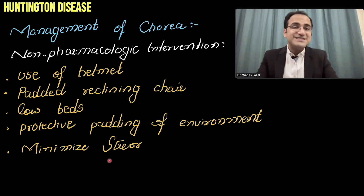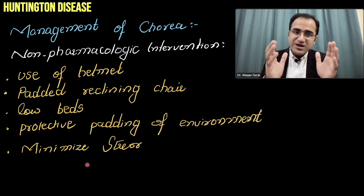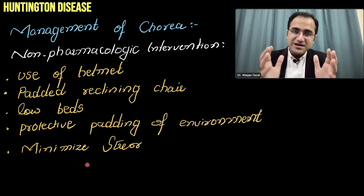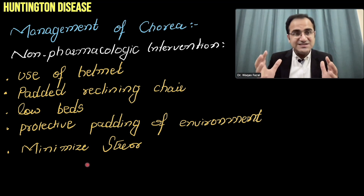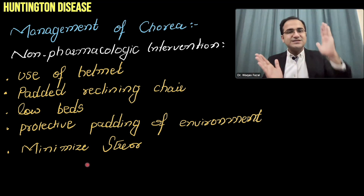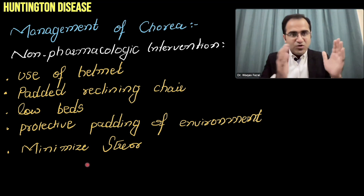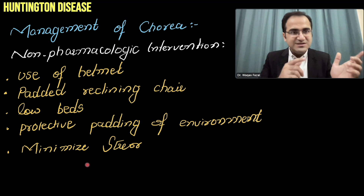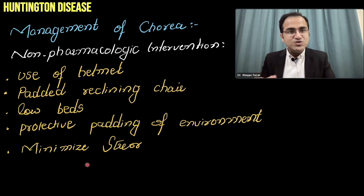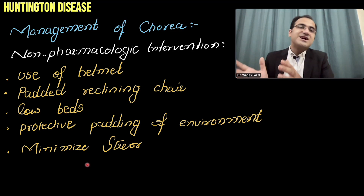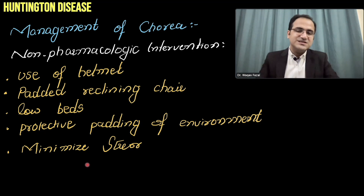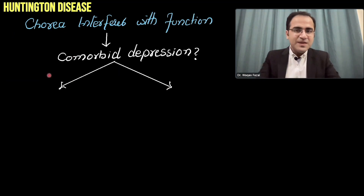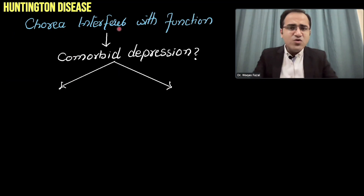Minimizing stress is an important intervention, as increased stress is a prognostic factor that accelerates Huntington disease — stressed patients are at higher risk of faster disease progression.